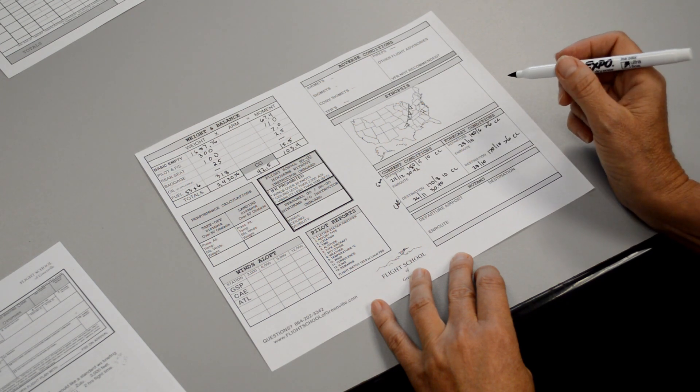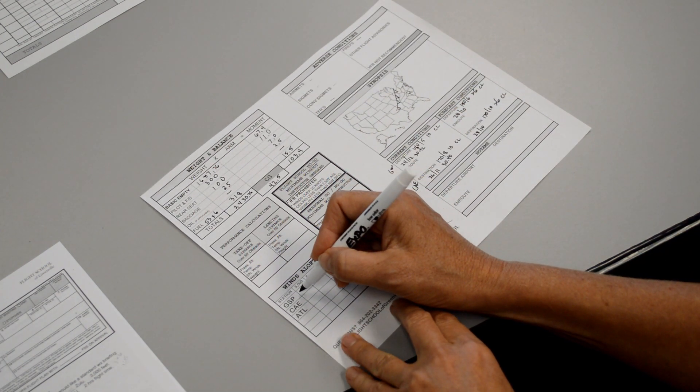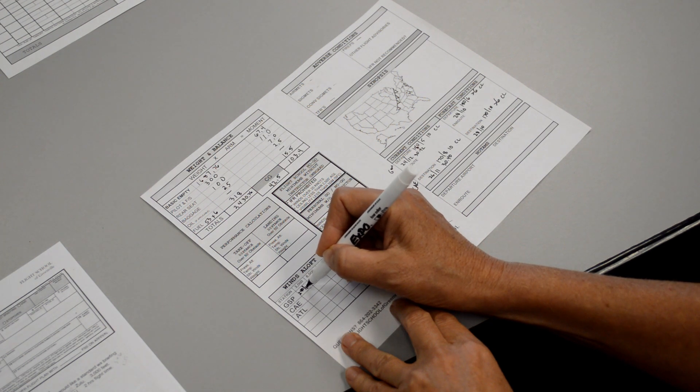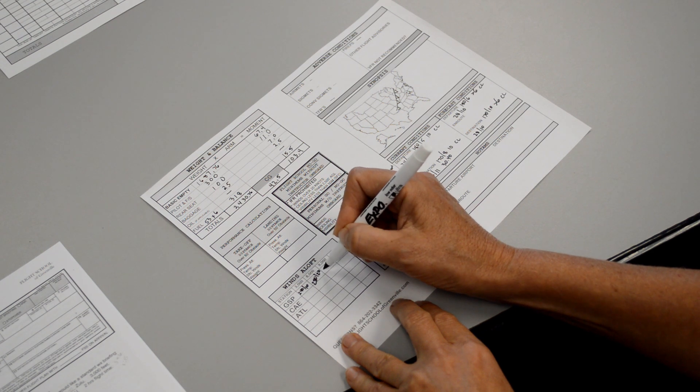For your winds aloft, GSP looks like 3,000 feet, the wind 240 at 10. And 6,000 feet, the wind 280 at 20. And the temperature at 6,000 is plus 14 degrees Celsius.